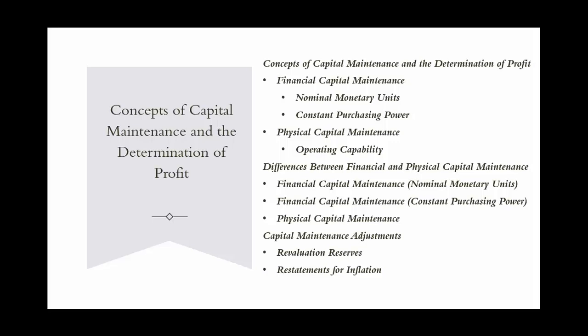Under financial capital maintenance using constant purchasing power, profit represents the increase in invested purchasing power. Only the part of the increase in asset prices that exceeds the general level of inflation is regarded as profit. For example, JKL Retail holds inventory worth $1 million. By year end, the value increases to $1,300,000, but the inflation rate is 10%. To maintain purchasing power, the inventory needs to be worth $1,100,000 (10% more than $1 million). Therefore, the profit is $200,000 ($1,300,000 minus $1,100,000).